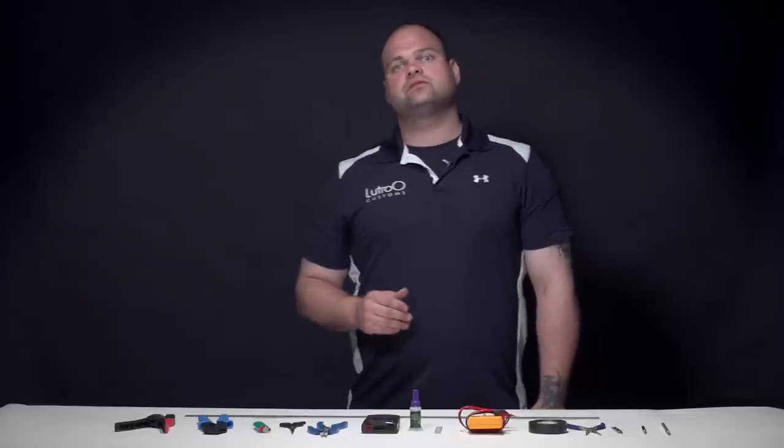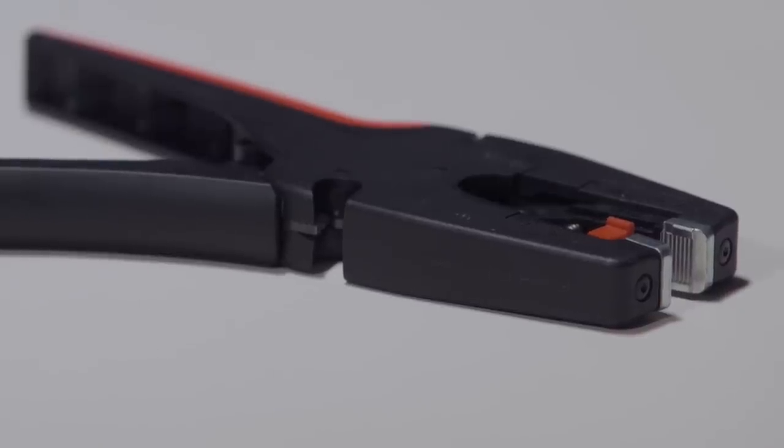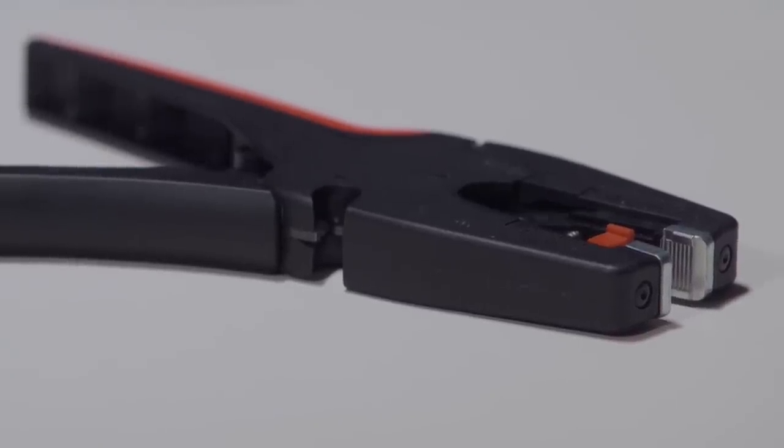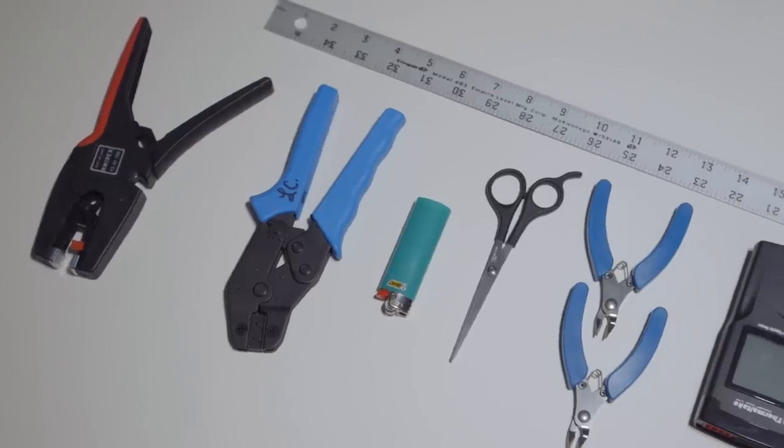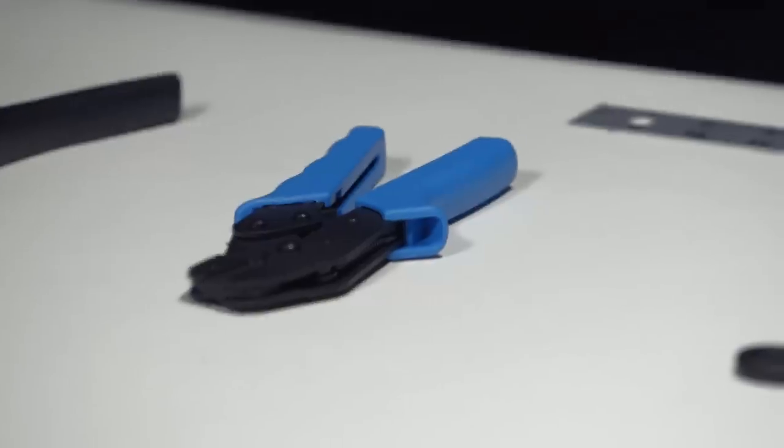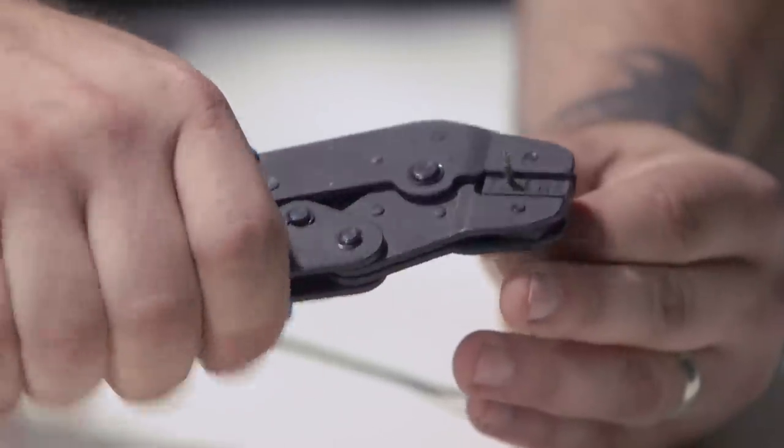I'm going to start going through some of these tools that we're going to be using for sleeving. First up is our wire stripper. I really do trust the Nipex brand. Really straight, really perfect and right on strips. The second one is the LC crimping tool. It's custom milled, made for perfect crimps.